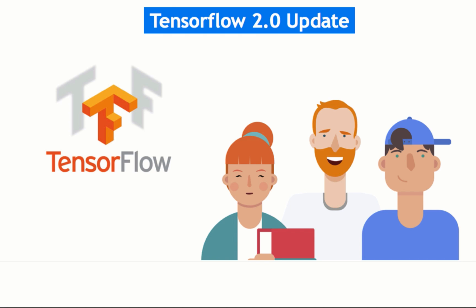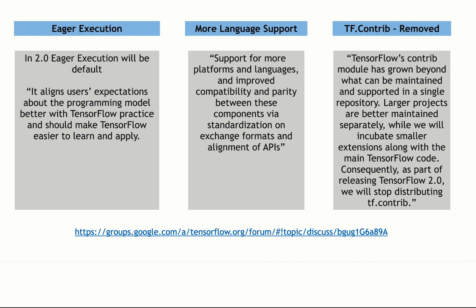In TensorFlow's defense, the library is very large with multiple extensions and modules. At this point, it's kind of expected to have some cleaning and updating performed, and these updates are going to be fantastic for TensorFlow. So, all that sounds great and we can't wait to see the changes, but what are they? We can see with 2.0, some of the main changes are going to include eager execution becoming the default running method in TensorFlow.